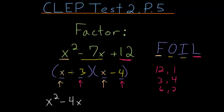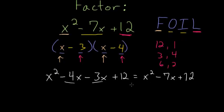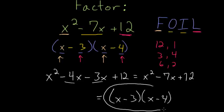And then we have the inner terms, the minus 3 times x, which is just minus 3x. And then we have the last terms, the minus 3 times the minus 4. Negative times negative is positive, so we have plus 12. And if we simplify this, combining those two inner terms here, we have x squared minus 7x plus 12. And this shows us that x squared minus 7x plus 12 does factor into x minus 3 times x minus 4. And this is our final answer.